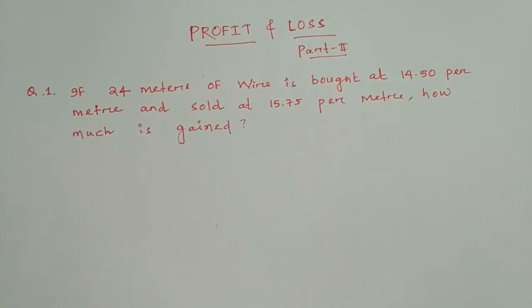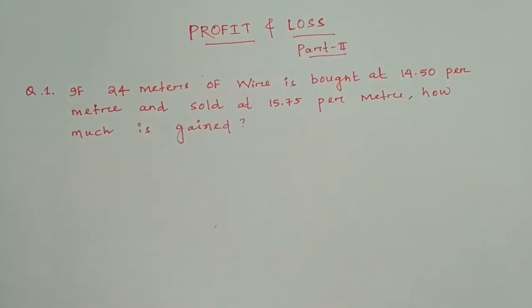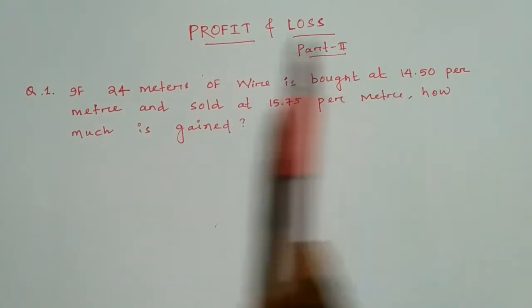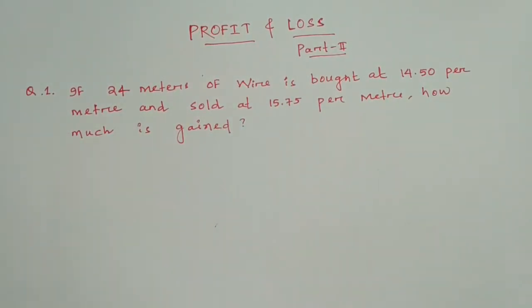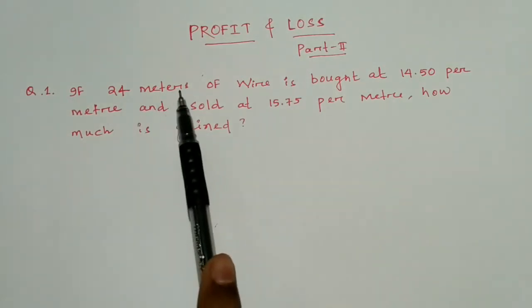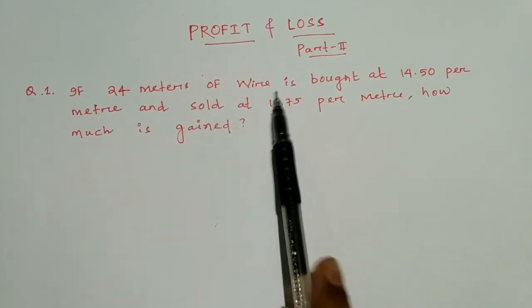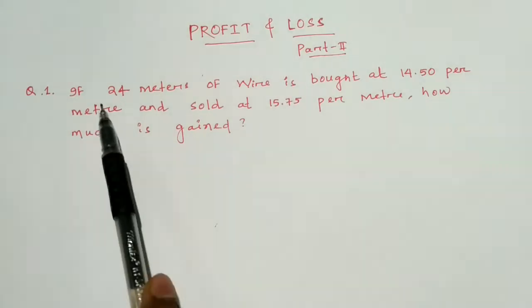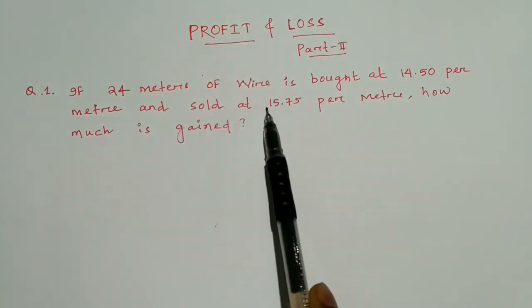Here is question number one. If you did not see the first part of this profit and loss video, the link is provided — please go to that video, clear all your concepts, then come to this part. Question: if 24 meters of wire is bought at 14.50 rupees per meter and sold at 15.75 per meter, how much is the gain?